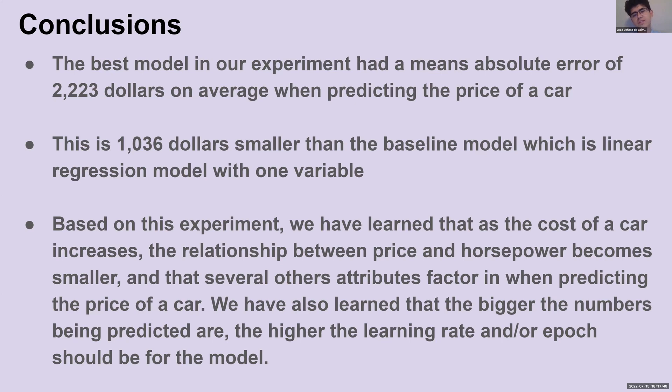Based on the experiment, we have learned that as the cost of a car increases, the relationship between the price and horsepower becomes smaller. And other factors, such as width, style, and the different types of wheels, also factor in when predicting the price of a car as the price becomes higher. We have also learned that the bigger the numbers being predicted are, the higher the learning rate and/or epoch should be for the model.